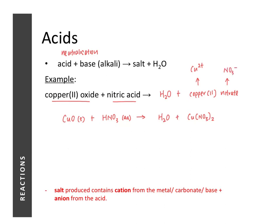Copper(II) nitrate has the formula Cu(NO₃)₂ because copper(II) is Cu²⁺ and nitrate is NO₃⁻; two nitrates are needed to balance the charges. After writing all chemical formulas, the equation is not yet balanced — we balance the nitrate and then the water. The state symbol for water is liquid: CuO(s) + 2HNO₃(aq) → Cu(NO₃)₂(aq) + H₂O(l).